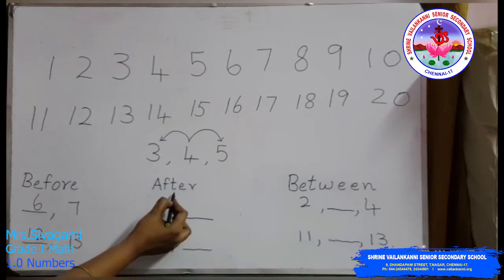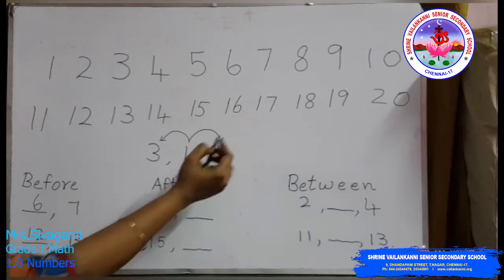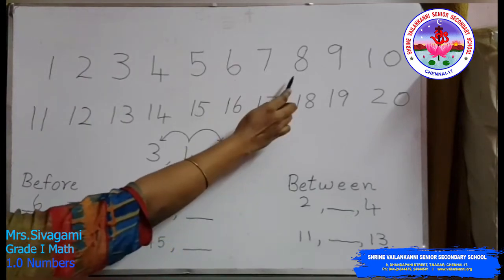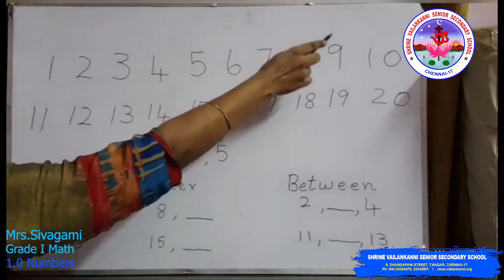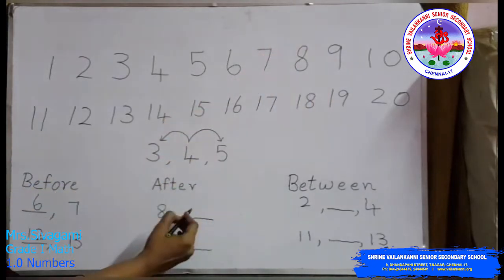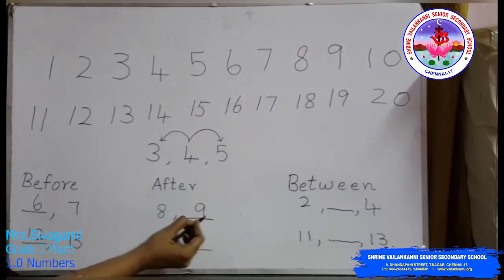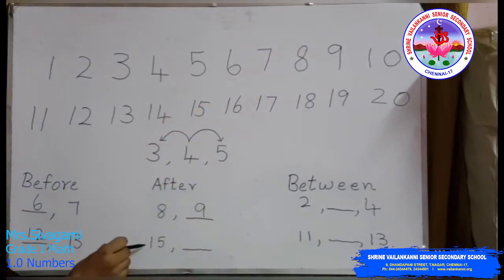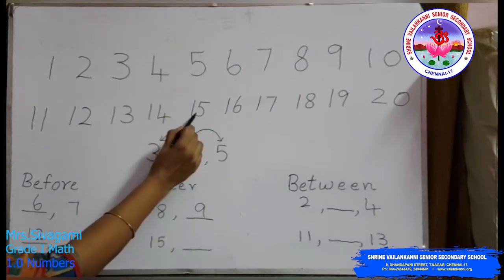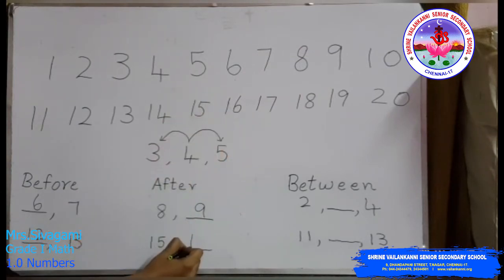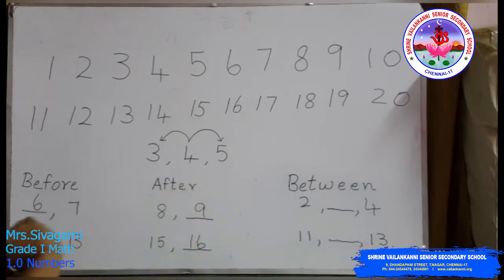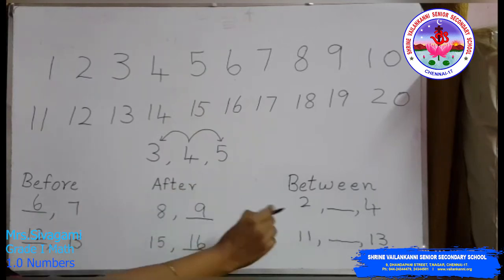Now we will find the 'after' numbers. We take number eight — we want to find the number after eight, and the number after eight is nine. Next, we take 15: after 15 we get 16.